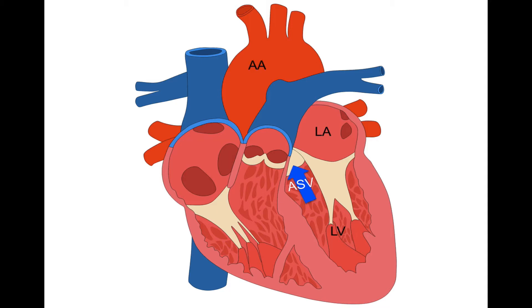From the aortic arch, branches take blood to the limbs, head, and neck. The flow ultimately continues behind the heart, becoming the thoracic aorta first, then the abdominal aorta, giving branches to the whole body so all tissues can receive highly oxygenated blood.